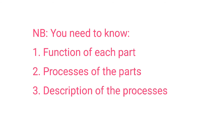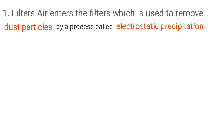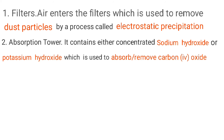A student is required to know the function of the parts and the description of the process. The first part: air enters the filters, which are used to remove dust particles by a process called electrostatic precipitation. The remaining air is passed through the absorption tower, which contains concentrated sodium hydroxide, which is used to absorb carbon dioxide gas.